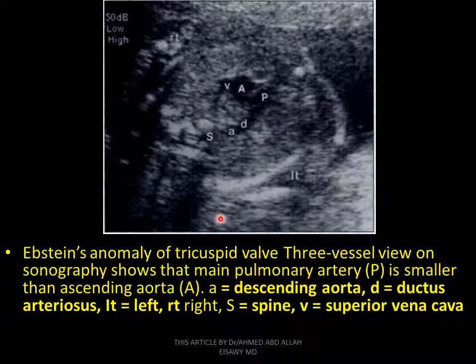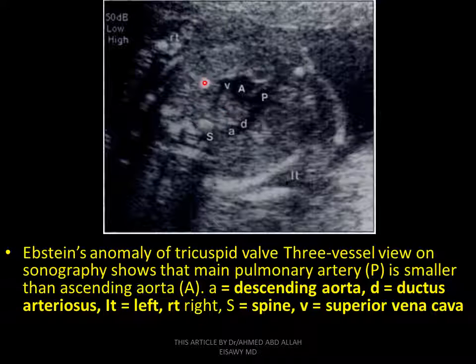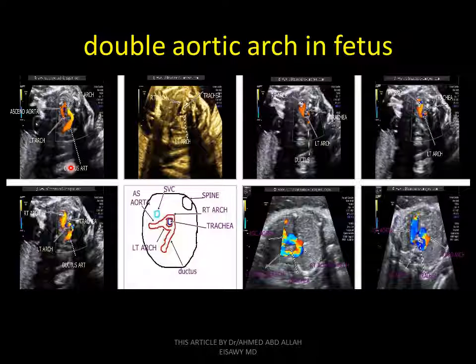This is the ascending aorta and the veins. The ascending aorta, ductus arteriosus, pulmonary trunk — small than the aorta. The ductus arteriosus, ascending aorta. Why is the pulmonary artery small? Because the pulmonary artery is a channel.